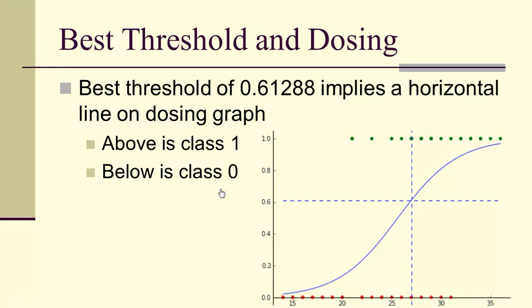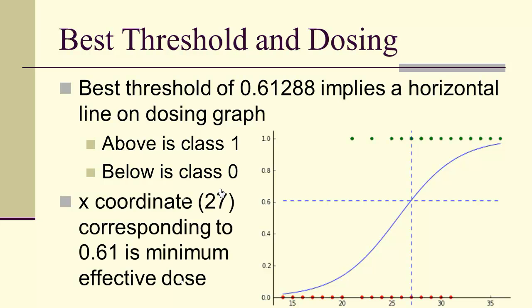So again, a threshold of 0.61288 implies a horizontal line on the dosing graph. And the x-coordinate for 0.61288, of course, it gives us a vertical separation.